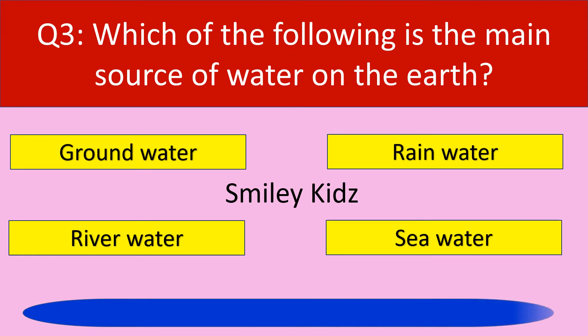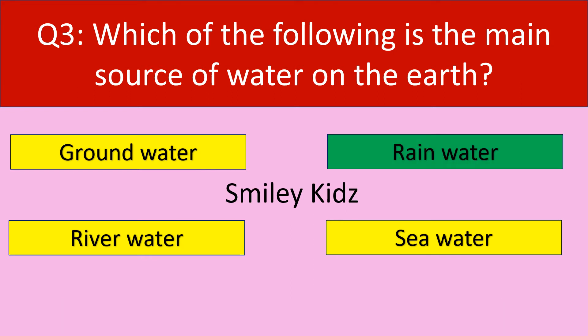Your time is up and the correct answer is rainwater. Rainwater is the main source of water on the earth.